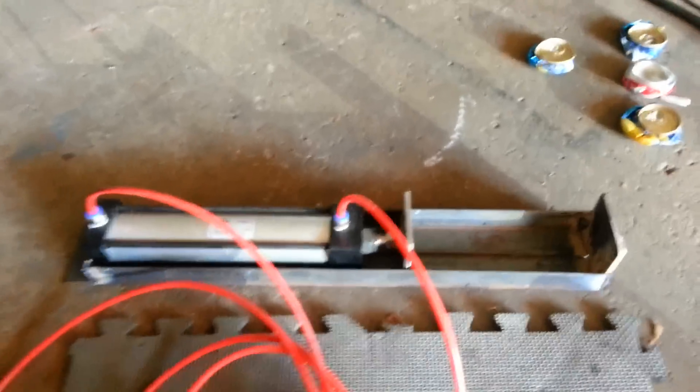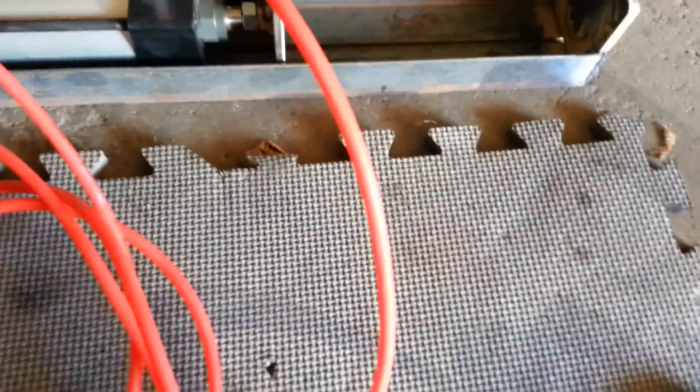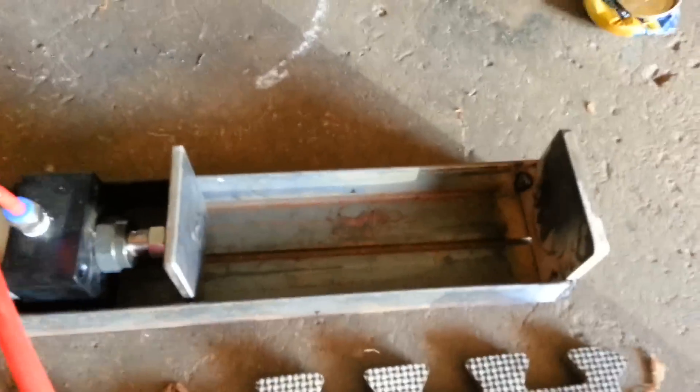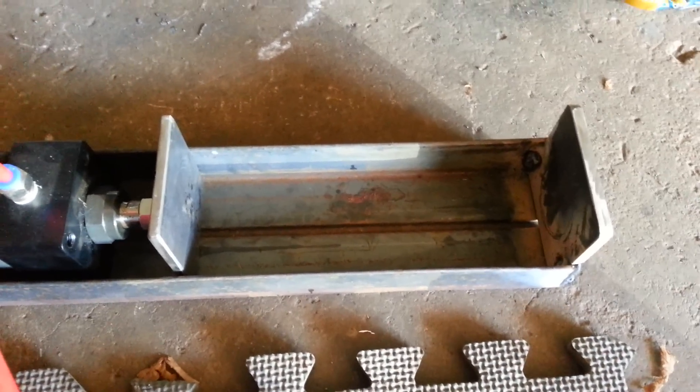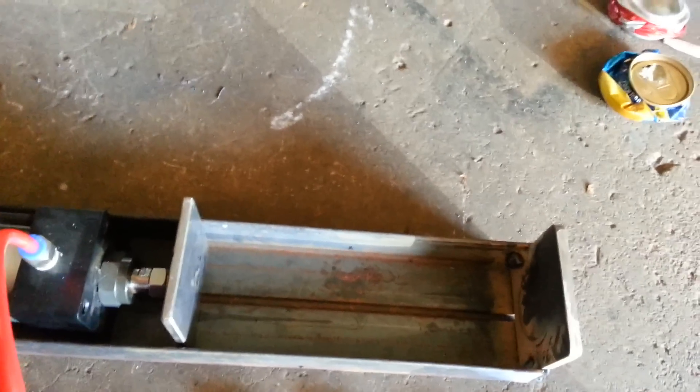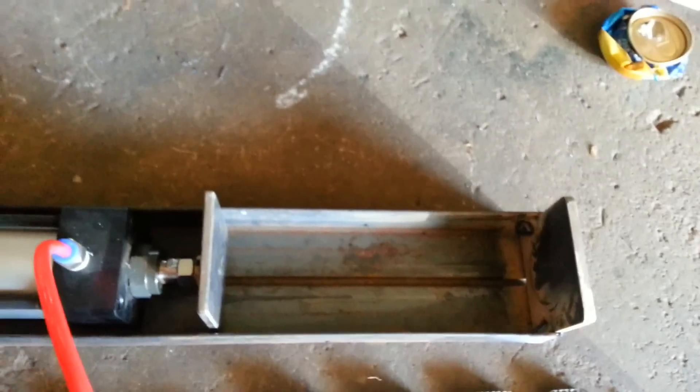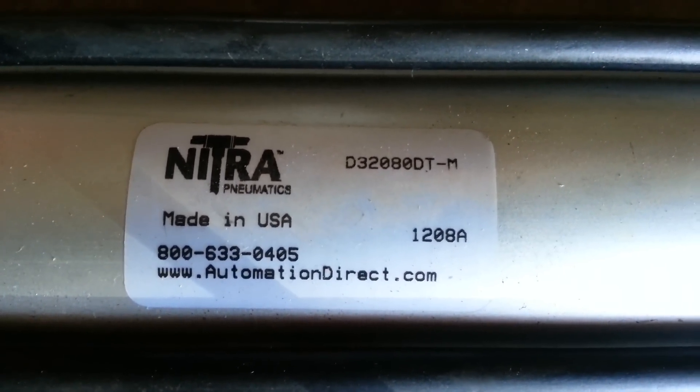Now the reason why I went with this long cylinder is so that I could put a tall can in there, such as like an Arizona iced tea can or anything that's tall like that, you know, even like the 16 ounce cans, or whatever other cans would be that tall. If you go to Automation Direct website and you plug that model in, I believe it's 1208A, you can see what the working tolerances are of this cylinder.